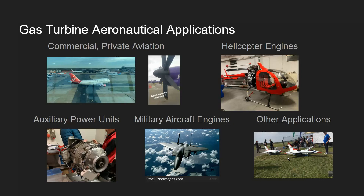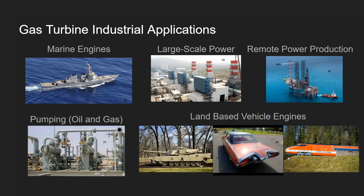There are also many industrial applications. Marine engines benefit from the gas turbine's small size and huge power output, making it ideal for a vessel cruising at a fairly constant speed. Large-scale power production is one of the biggest industries for gas turbines, with the largest machines in the 300–350 megawatt range producing power for the grid. For remote sites such as oil rigs or scientific research centers without grid access, a small microturbine can sit on-site and produce reliable power locally.